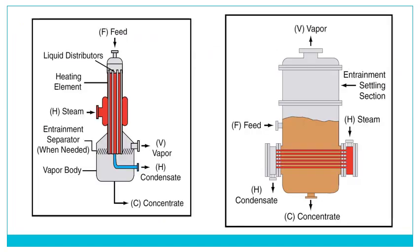Two different models for evaporators are shown: a vertical type on the left and a horizontal type on the right. In the vertical type, feeding is from the top and concentrated milk comes out from the bottom; red columns represent the steam heating unit, and milk between them loses water by evaporation and becomes concentrated while steam is separated and condensed. In the horizontal type, feeding occurs at point F and goes to the heating section where red tubes carry steam; heat exchange concentrates the milk which comes down while vapour goes up and is condensed.